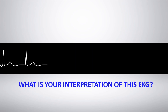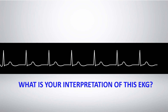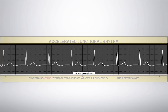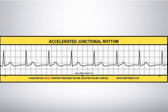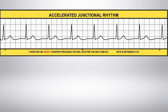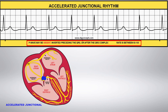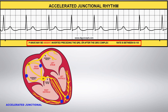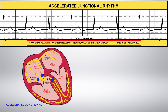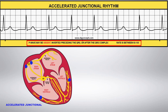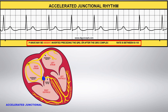What is your interpretation of this EKG rhythm strip? Accelerated Junctional Rhythm. Just like any junctional rhythm, the AV node, or the tissue surrounding it, takes over as the primary pacemaker. With accelerated junctional rhythm, the heart rate is between 60 to 100 beats per minute.